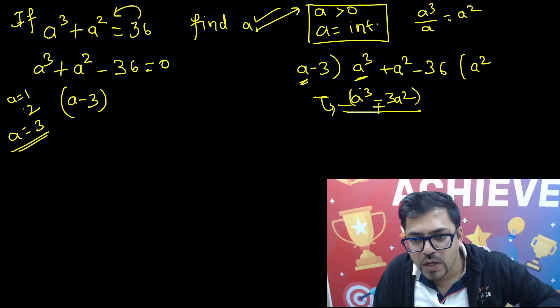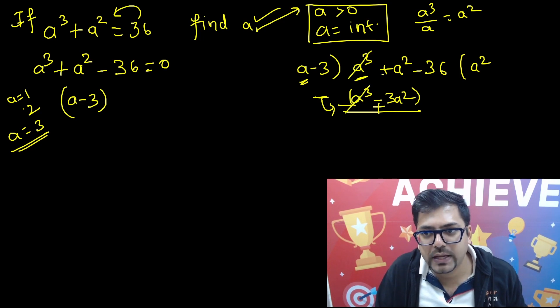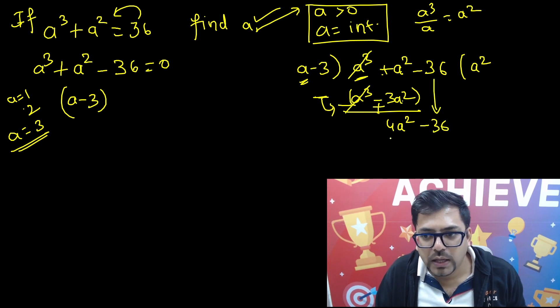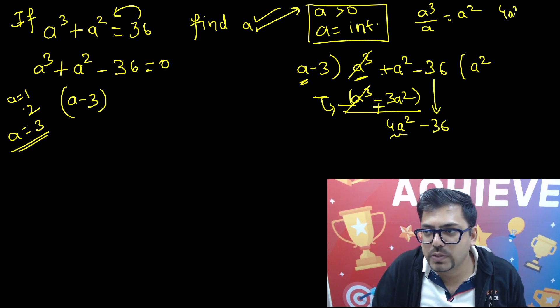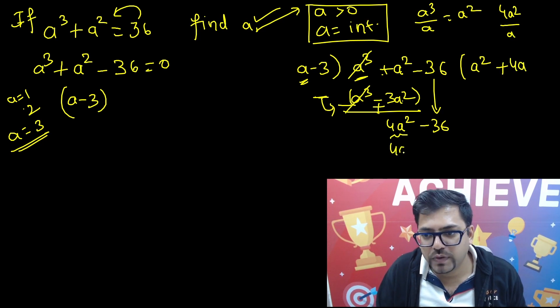When we subtract this lower portion we do a minus in multiplication, so minus in multiplication reverses the sign. We have got this a³, a³ got cancelled, a² and then plus 3a² we'll get 4a², and then minus 36 from here will come down.